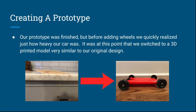Creating a prototype: our prototype was finished, but before adding wheels we quickly realized just how heavy our car was. It was at this point that we switched to a 3D printed model, very similar to our original design. Instead of being made of wood, it was made out of plastic — very lightweight.